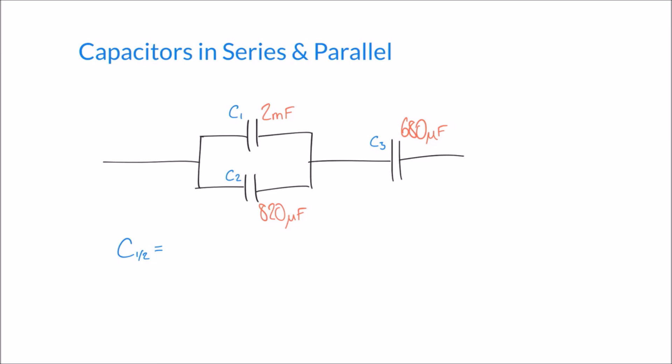Now what I said on the previous slide is that we need to be consistent in the units that we choose to use in these examples. And so there are a thousand microfarads in a millifarad. And so rather than saying 2 millifarads, what I'm instead going to say is 2,000 microfarads when I enter into my formula here. So we can say that C1 in parallel with 2 is 2,000 plus 820.